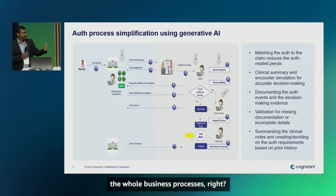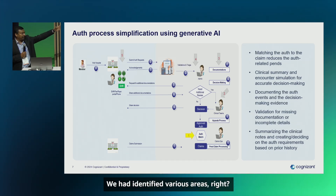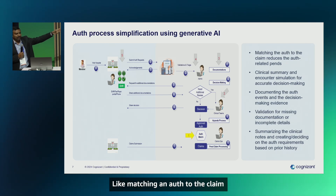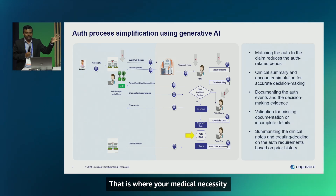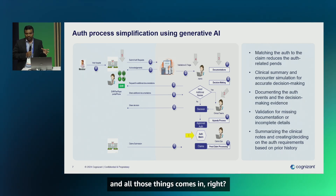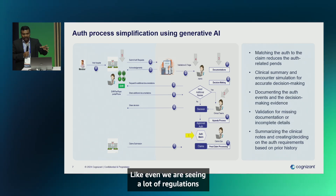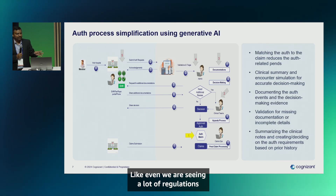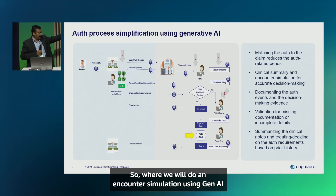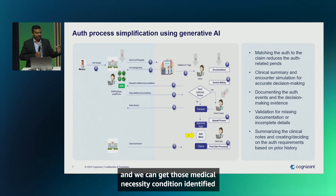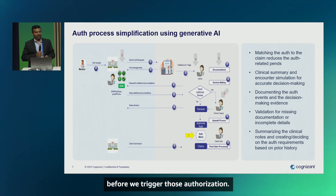We identified various areas — like matching an auth to the claim, or clinical summary through an encounter simulation. That is where medical necessity and related determinations come in, and there are lot of regulations focused on expediting some of these prior authorization processes. Using Gen AI, we can perform an encounter simulation to get those medical necessity conditions identified before we trigger authorization.